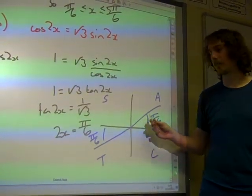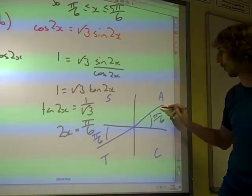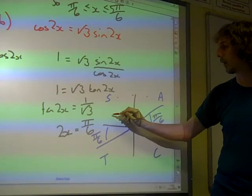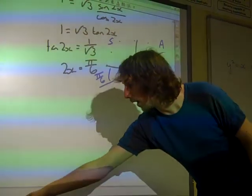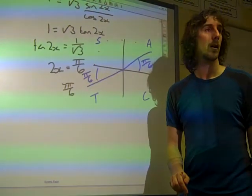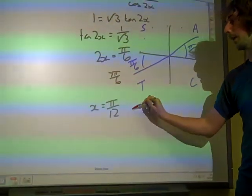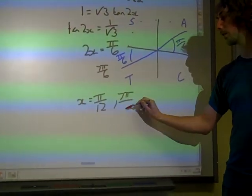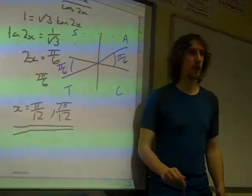And if we count them off, remember, x is between 0 and π, so 2x is between 0 and 2π. We're going all the way around. And if we count those off, we've got 1, 2, 3, 4, 5, 6, 7π by 6 as the other value. And now we divide by 2. π over 12. 7π by 12. The other two answers.